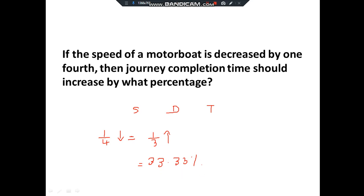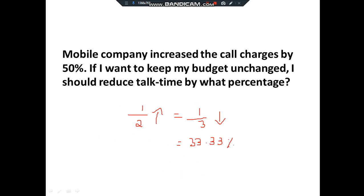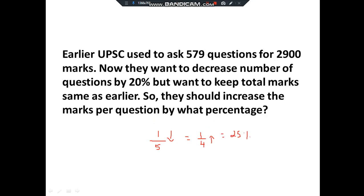Mobile company increases call charges by 50%. If I want to keep my budget unchanged, I should reduce talk time by what percentage? 50% = 1/2, increase. Keep numerator 1; add: 2+1=3. Decrease — 1/3 = 33.33%. Talk time should be reduced by 33.33%.